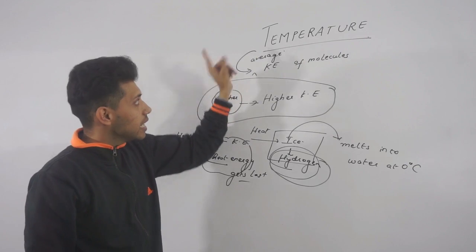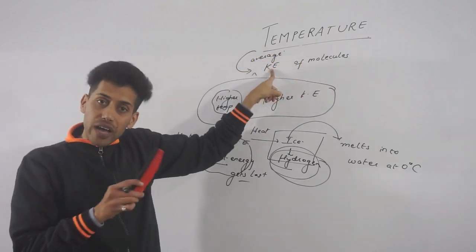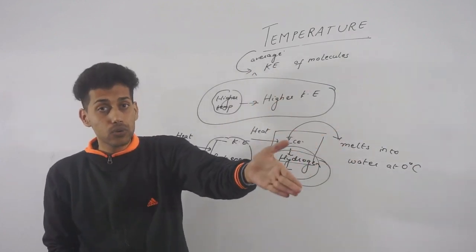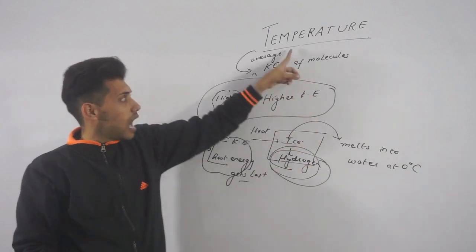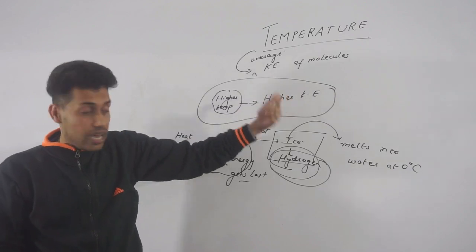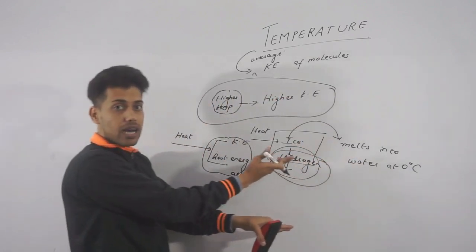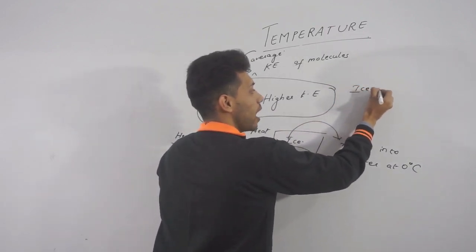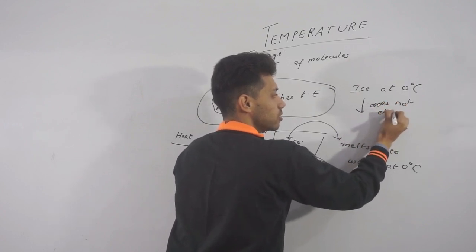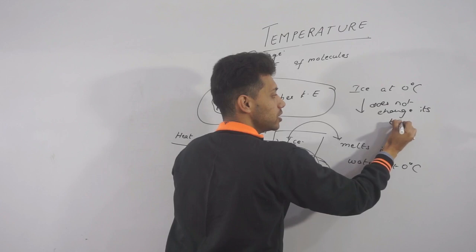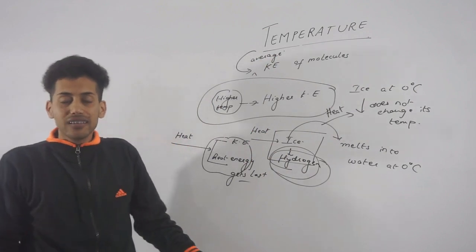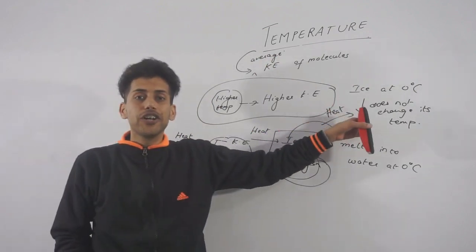Right, so in short we can say that temperature is a measurement of average kinetic energy, not heat energy. Okay? If this is the case that whole heat energy gets converted into kinetic energy, then you can say. Otherwise we emphasize on this fact, not on the heat energy. And that is why we have the very light example that ice at 0 degree Celsius does not change its temperature even when we supply heat. Why? Again, same. Because heat is not converted into kinetic energy.